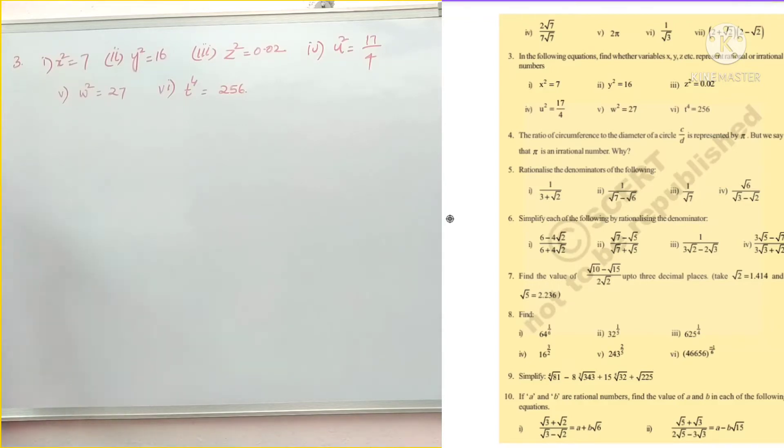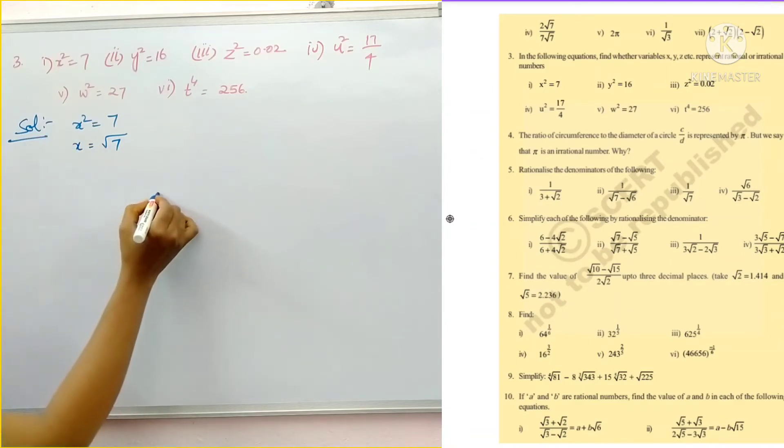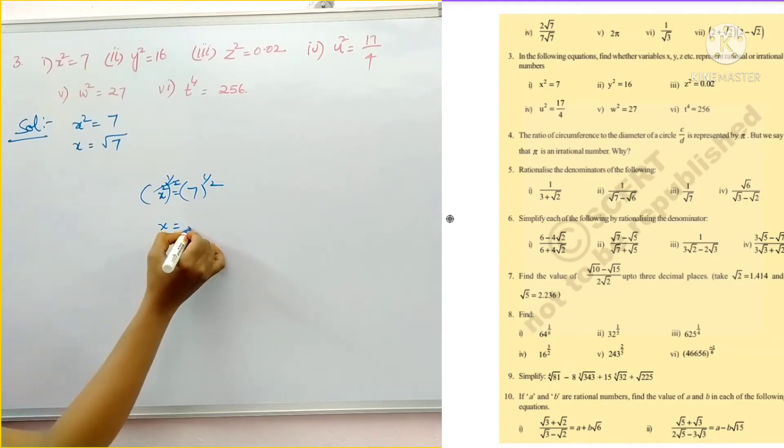So first problem, x square is equal to 7. Then what about x? Square root of 7. So x square is equal to 7. To remove this square, we apply whole power 1 by 2 on both sides. Then this 2 and 2 will get cancelled. Then this is x is equal to square root of 7.